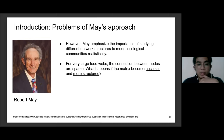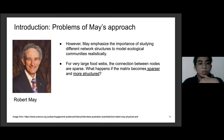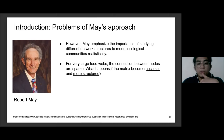The problem with May's approach is that it is not very realistic: ecological communities have different network structures, and the connections between nodes are not fully connected — not all animals eat all other animals. For large food webs there is actually a sparse connection between species. This raises the question: what happens if the matrix becomes sparser and more structured?